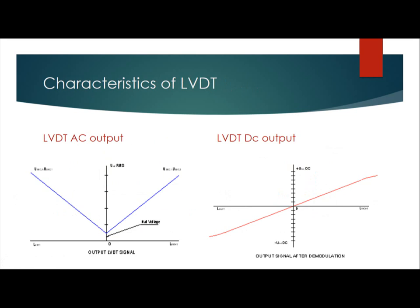There are two types of output in RVDT. As discussed previously, if the moving core is centered between the two secondary coils, there is a null voltage output of zero. If it is moved towards S1, the resulting voltage will be E1 minus E2, and in the other direction it will be E2 minus E1.